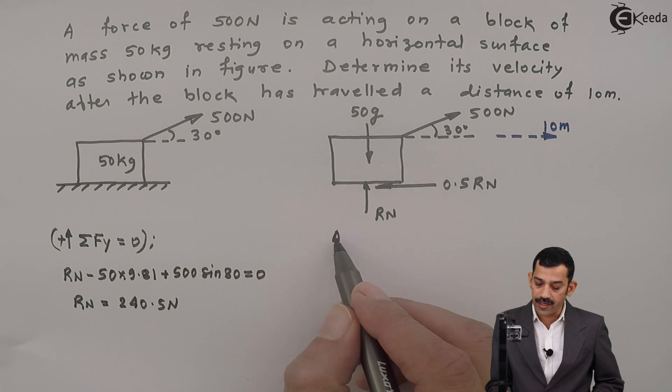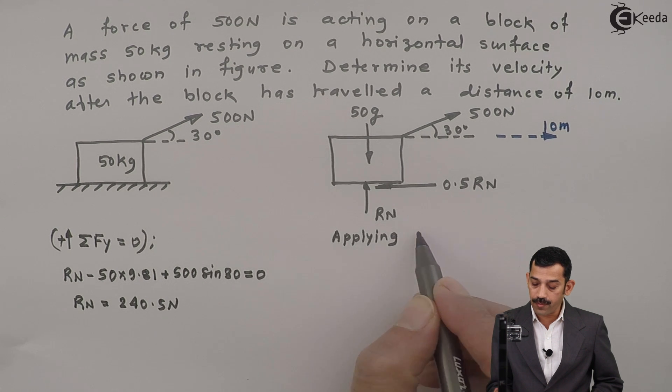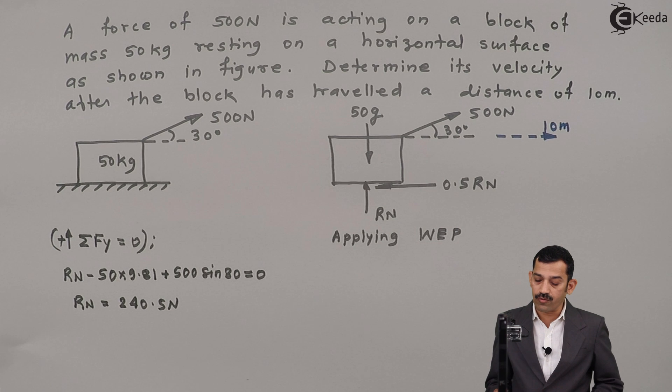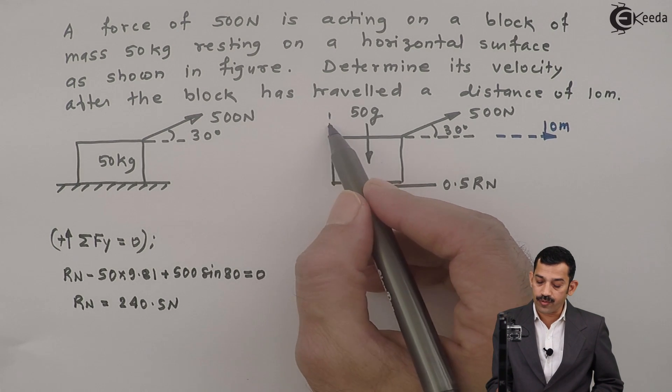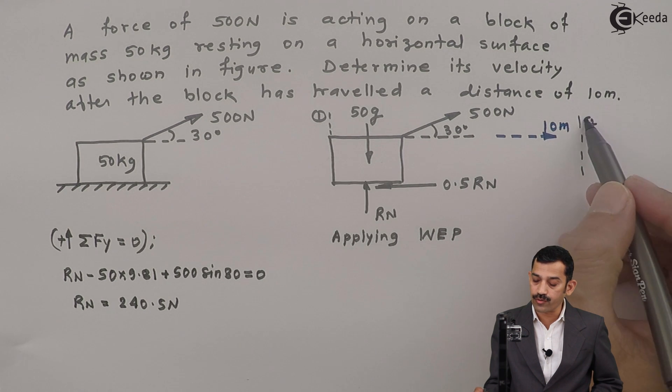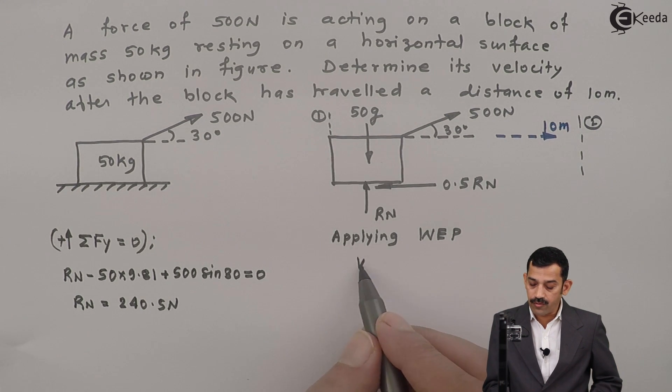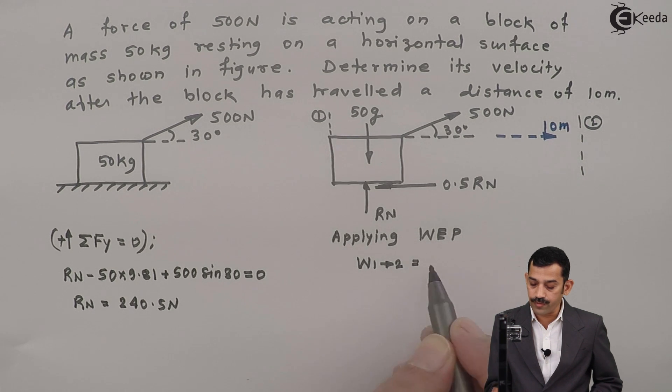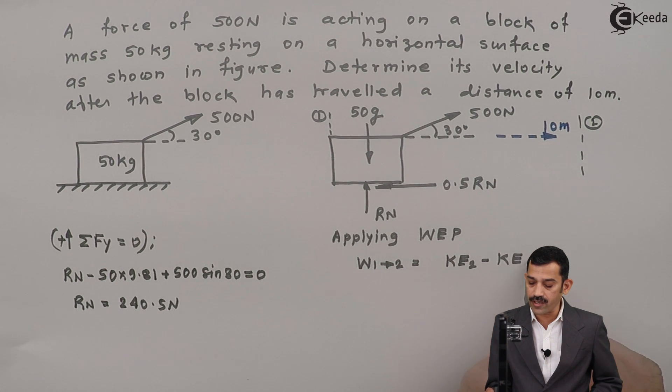Now if we will apply here work energy principle, applying WEP from say position 1 to 2. This one is say position 1, and after 10 meters, what position will get here is say position 2. Our equation is what: work done by forces when body moves from 1 to 2 is final kinetic energy, that is KE2, minus initial kinetic energy, is what KE1.